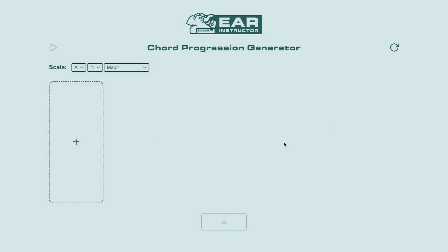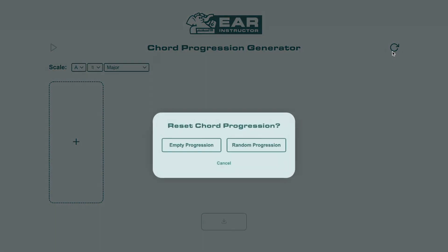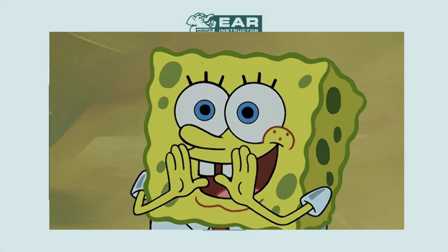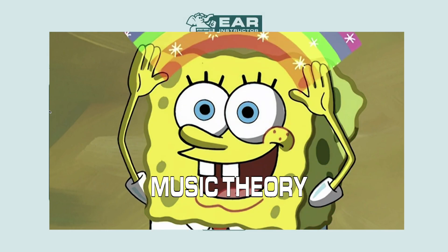So to do this, you can click the refresh or reset button here, and you'll see a pop-up with two options. You just have to choose the option for random progression, and a random Chord Progression will be generated using the power of music theory.